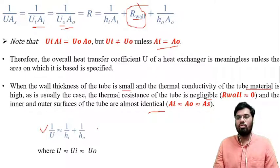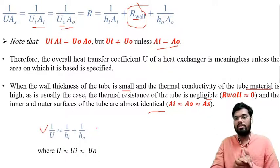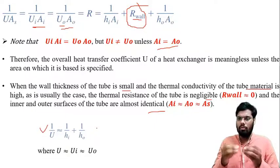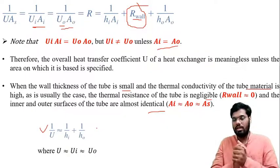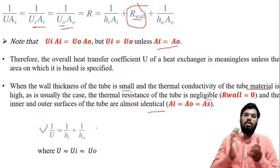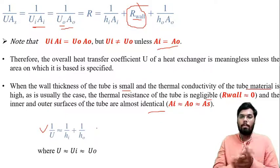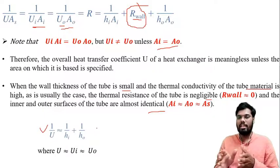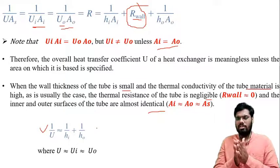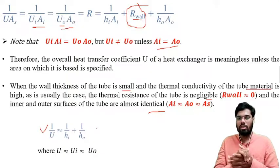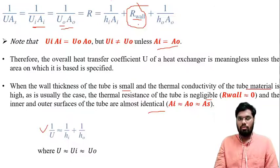Otherwise you have to calculate the overall heat transfer coefficient properly. We have already solved many numericals based on heat exchangers where the value of U was given in the question. But if the overall heat transfer coefficient is unknown, you must find it based on either inner or outer diameter as specified. If no information is given about which surface to use, you should go for the outer value UO.